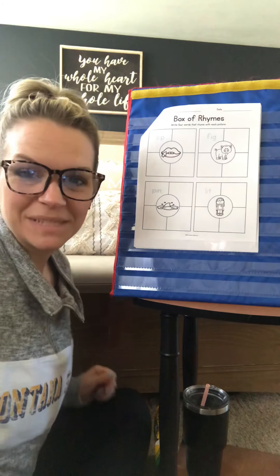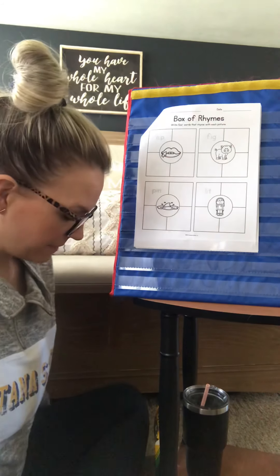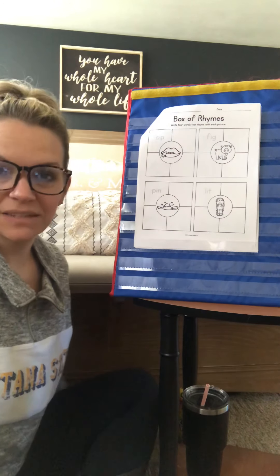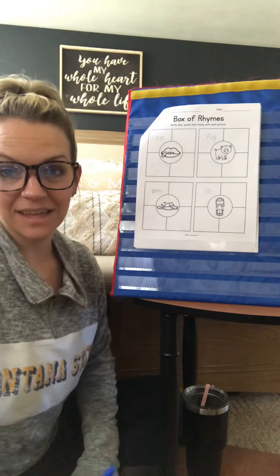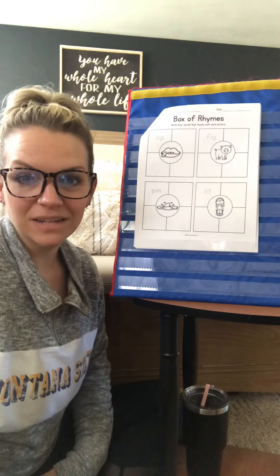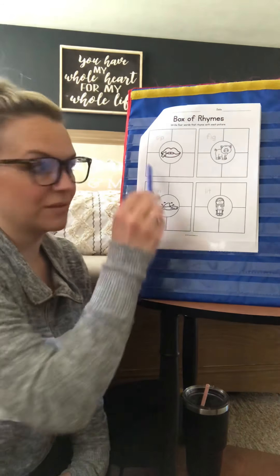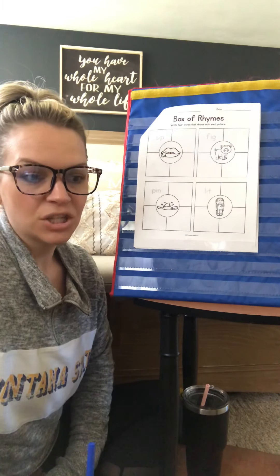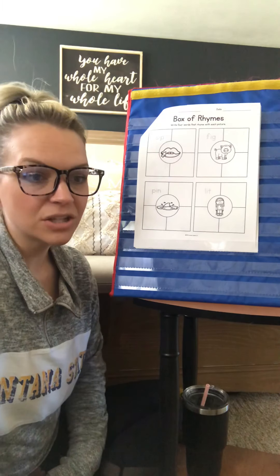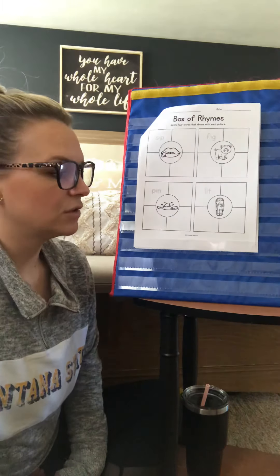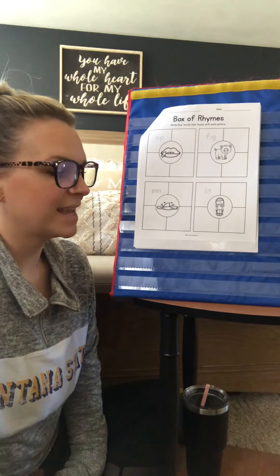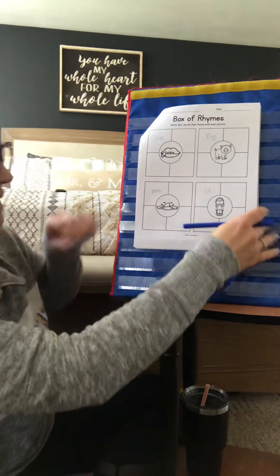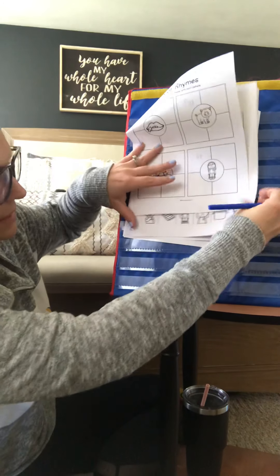Hi Kindergarten! Today we're going to talk about rhyming. You have quite a few pages of rhyming activities in your new packet. They all look a little bit different. Some of them, like this one, you're going to do word families. You also have some cut and glue, and then you have another word family one at the end where you're going to sort based on the vowel sound.